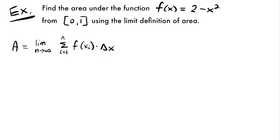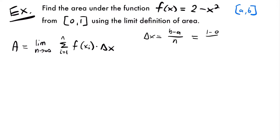We'll start by calculating delta x, which is equal to b minus a divided by n, where a and b come from our interval. The lower bound a is 0 and the upper bound b is 1, so delta x equals 1 minus 0 divided by n, which gives us 1/n.